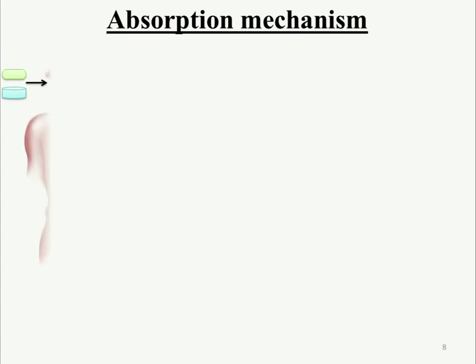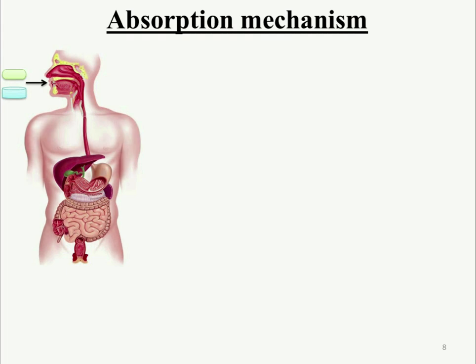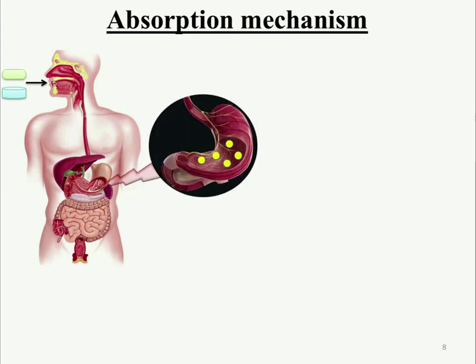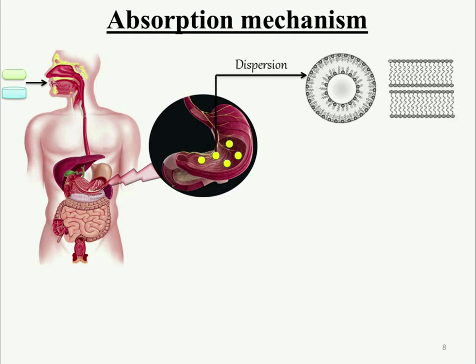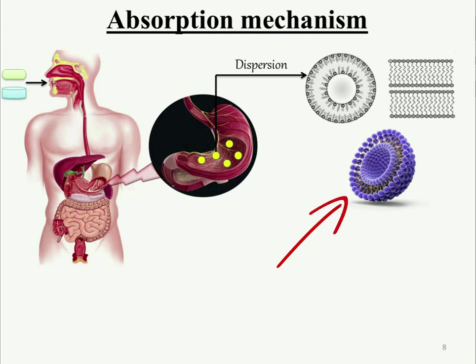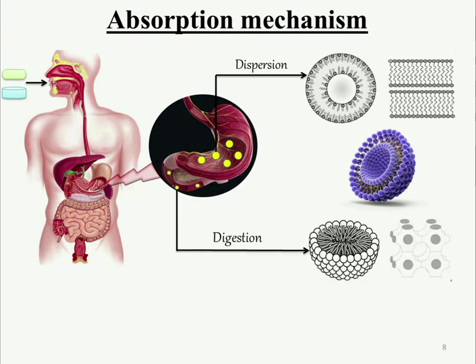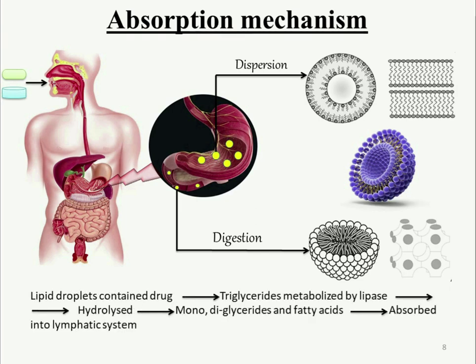Next is the absorption mechanism of the drug. When the SMEDDS formulation is delivered to the patient from the mouth, it travels through the GI tract and reaches the stomach, where dispersion takes place as small globules. It then goes to the small intestine, where the formulation — which has a hydrophilic head, lipophilic tail, and an inner core — is transparent in nature and undergoes digestion. The lipid droplets containing drug are broken down as triglycerides are metabolized by lipase and hydrolyzed, producing monoglycerides and fatty acids, which are then absorbed into the lymphatic system.